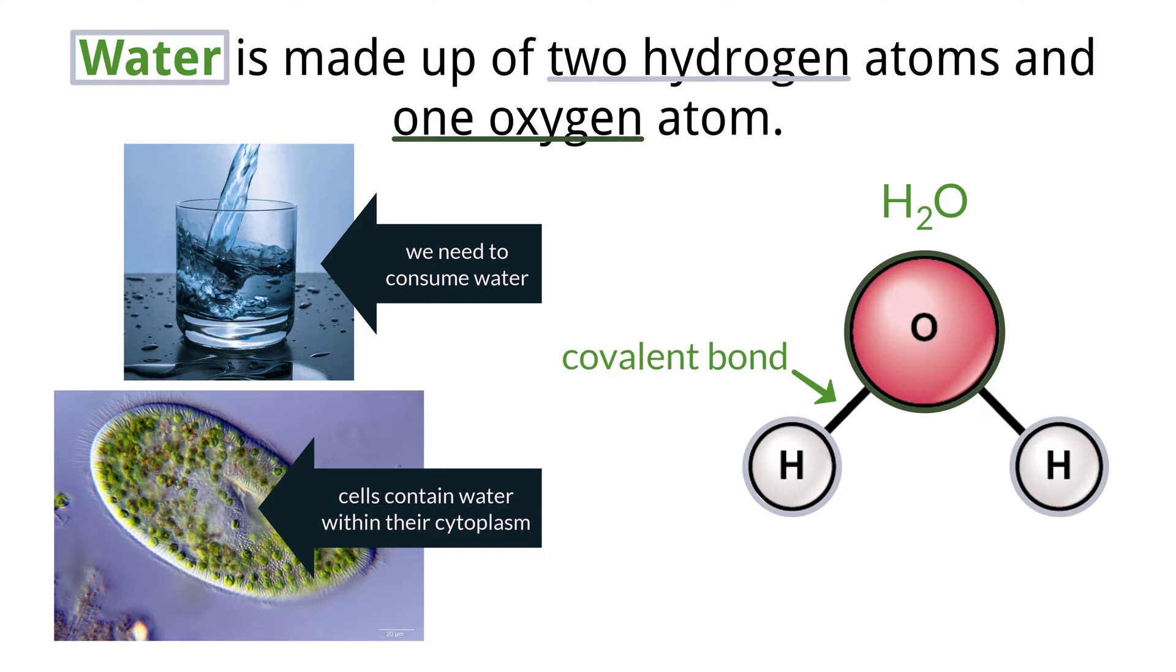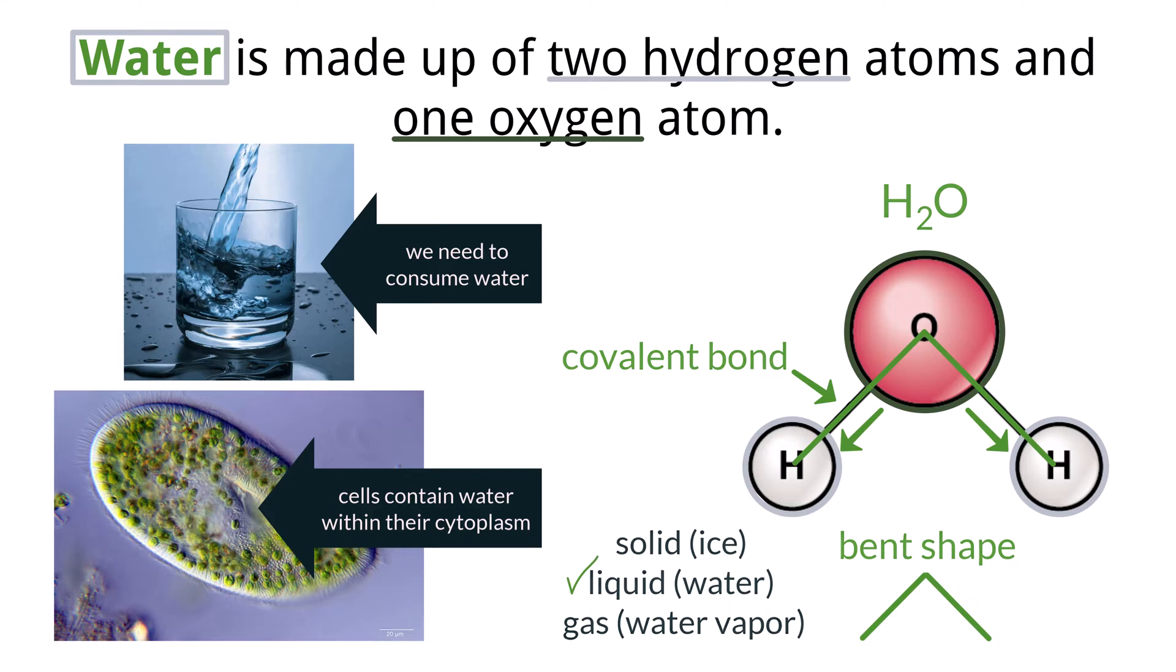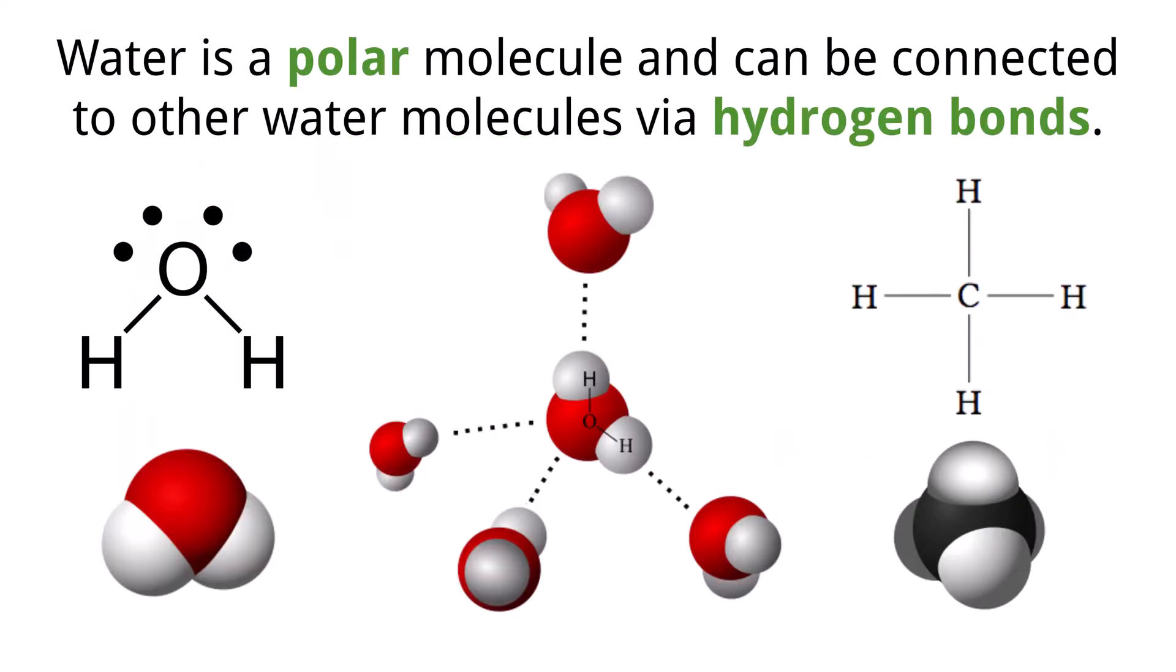These chemical bonds are called covalent bonds because the electrons are being shared between the two atoms. It ends up taking on this bent shape, which is important, so always draw the hydrogen atoms this way in relation to the oxygen atom. It can exist in different states like solid ice, liquid, or as a gas which we call water vapor.